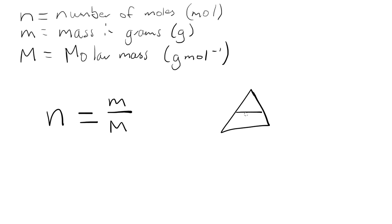And of course that is going to work with a simple triangle that you might remember. If I just draw up this triangle we can put n in the left corner, little m at the top, and big M down the right. Just by covering up one of those you can rearrange that formula nice and easily. So if you want the mass it's going to be the number of moles times the molar mass.